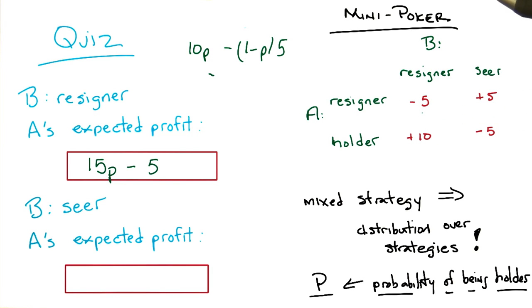So let me just double check that. So if P is 0, that means it never holds. It means it always resigns, and it gets minus 5, so that's right. And if P is 1, it means it always holds, so it should get a plus 10, and 15 minus 5 is 10. So boom. Yeah, it works. You used math there. Very good.